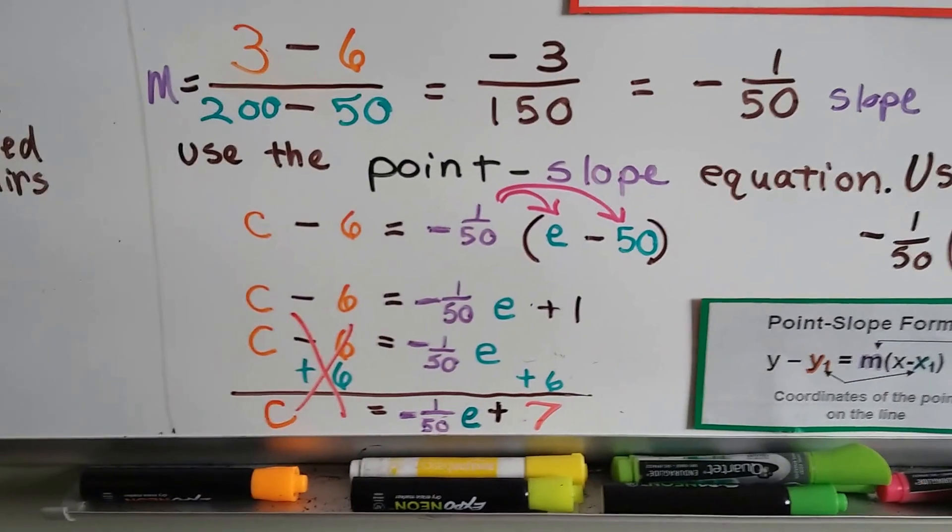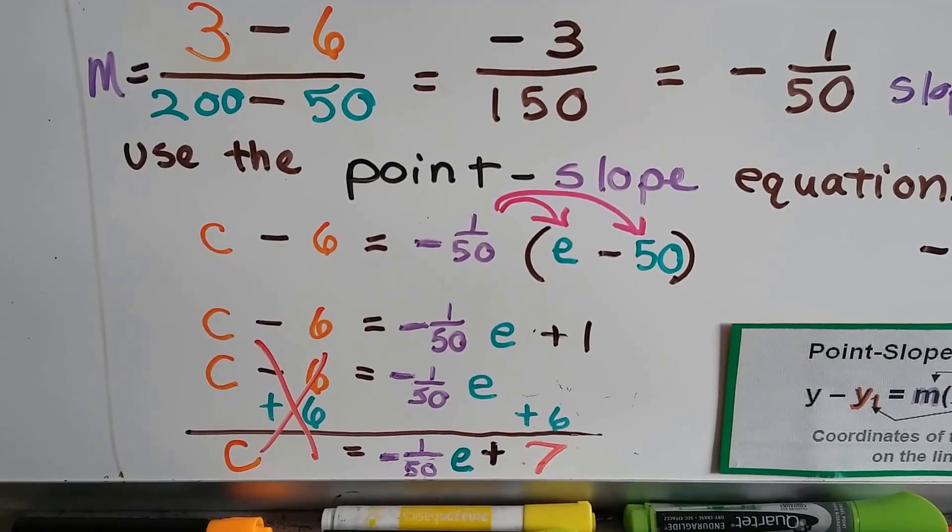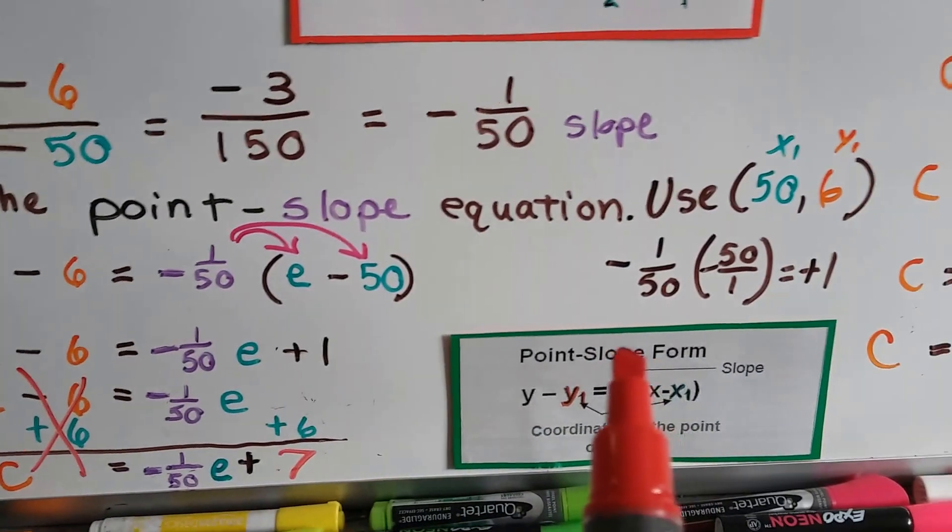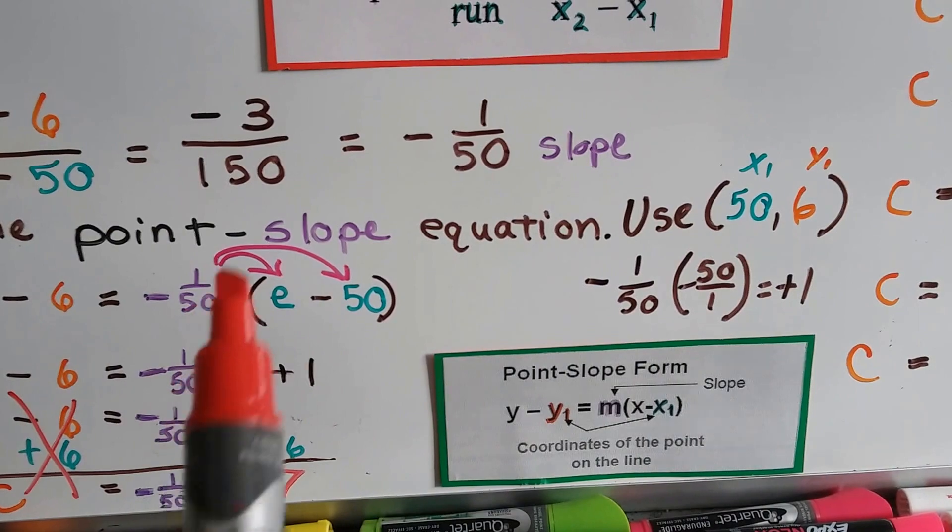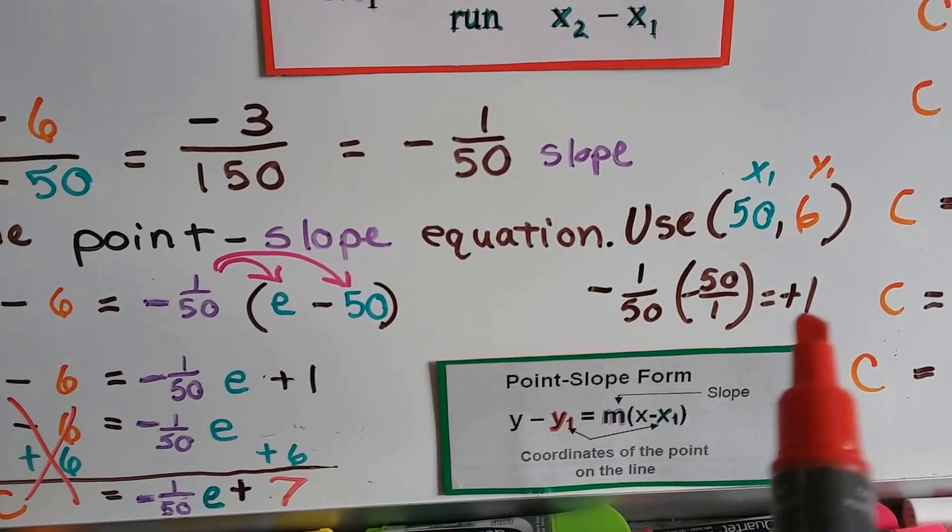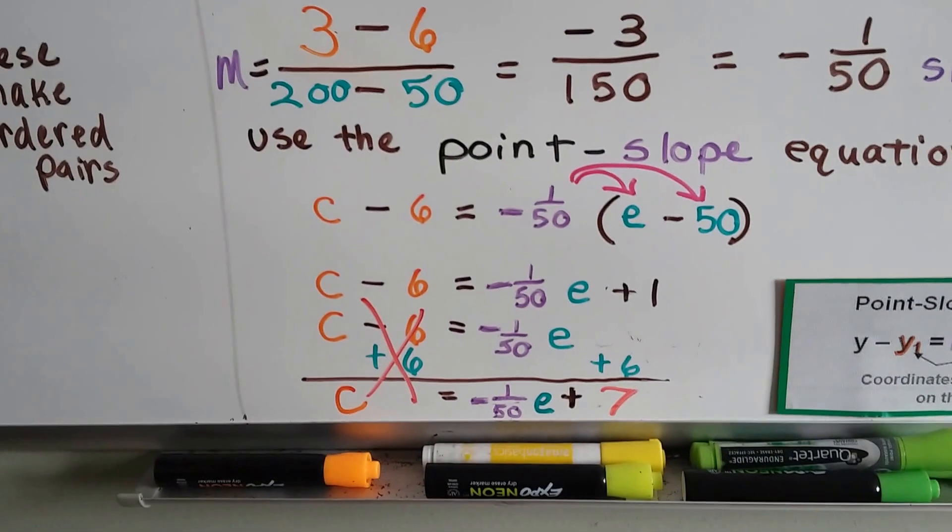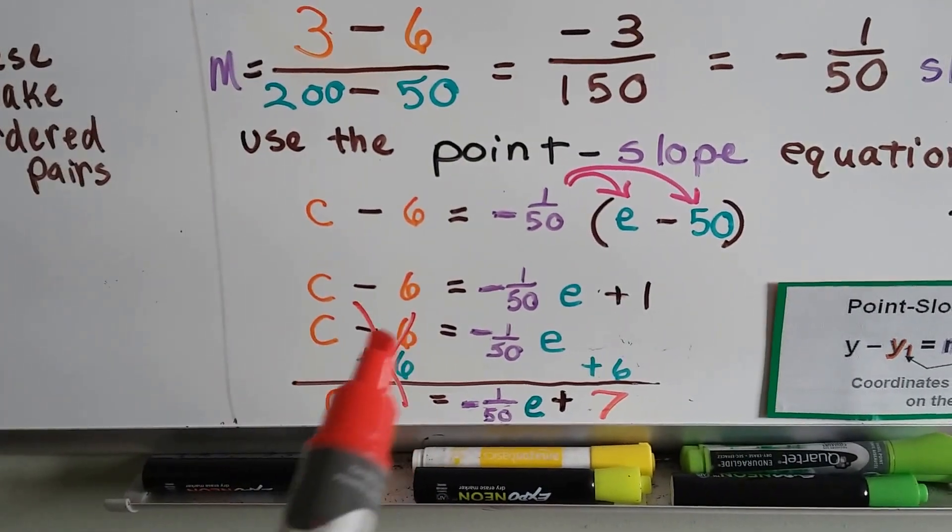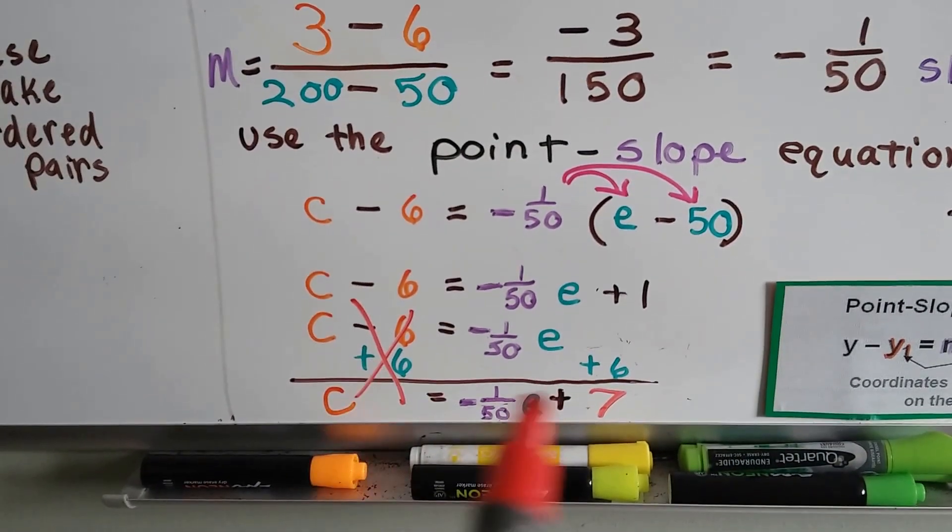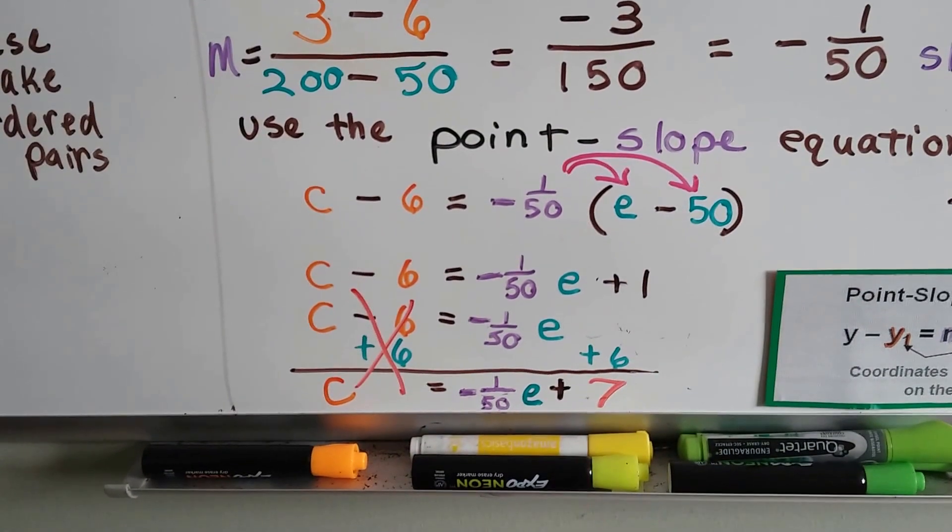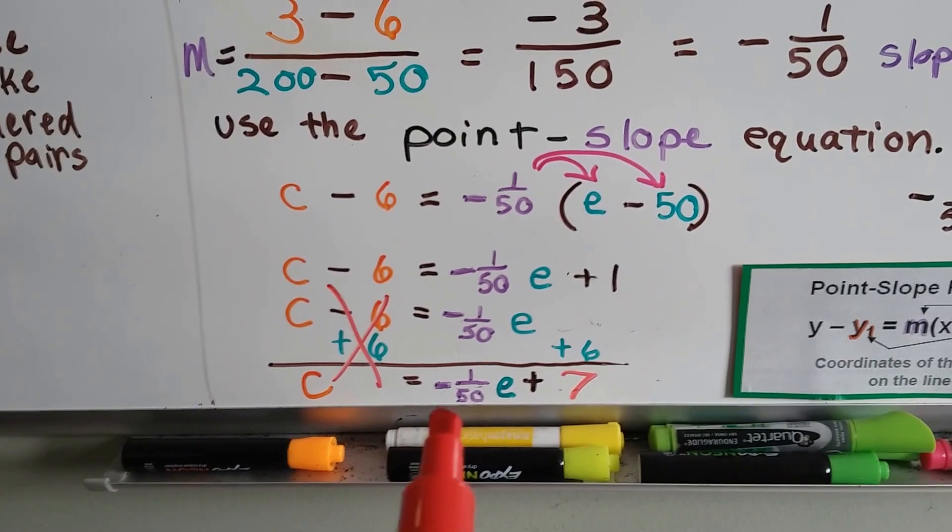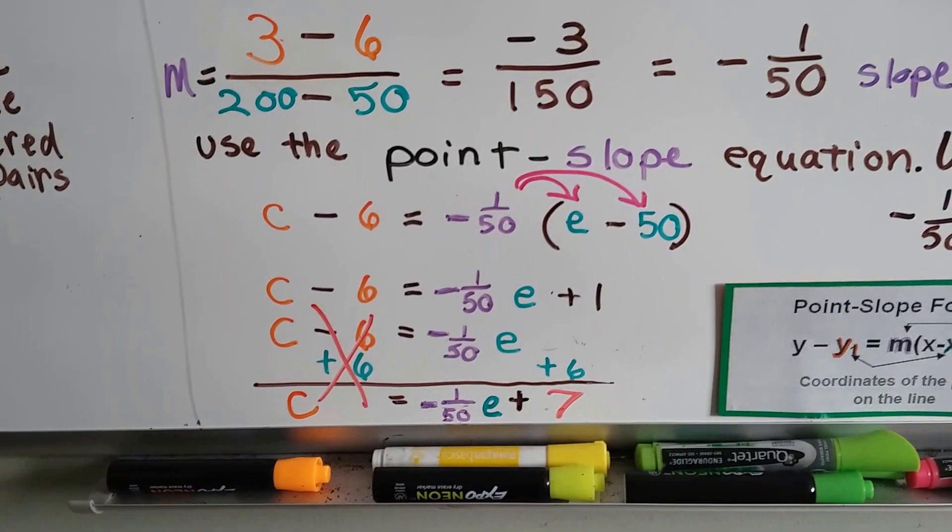Now we just solve the equation. We have to use distributive property with the negative 1/50th, and we get negative 1/50th e. And when we multiply the negative 1/50th times negative 50, we get a positive 1 because it's 50 over 50. And a negative and a negative makes a positive. So now we have a plus 1. And this minus 6 on this side has to go away. We need to eliminate it to isolate that c to one side. So we're going to add 6 to both sides with additive inverse. And that gets rid of this as a zero pair. And now we've got c equals negative 1/50th e plus 7. See?